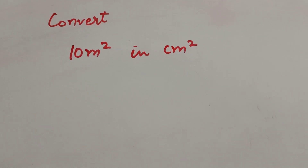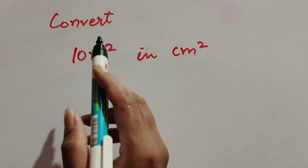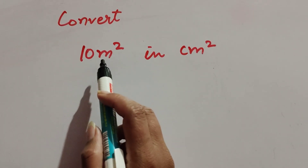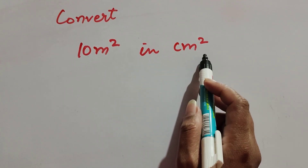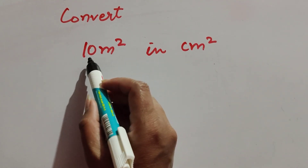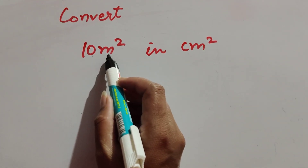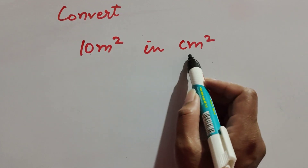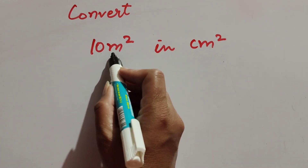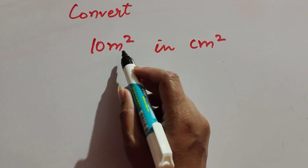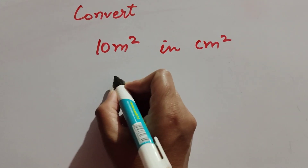Hello friends, welcome to my channel. In this video we discuss how to convert 10 meter square into centimeter square. In this question we change 10 meter square to centimeter square — the unit is meter and we change it into centimeter.